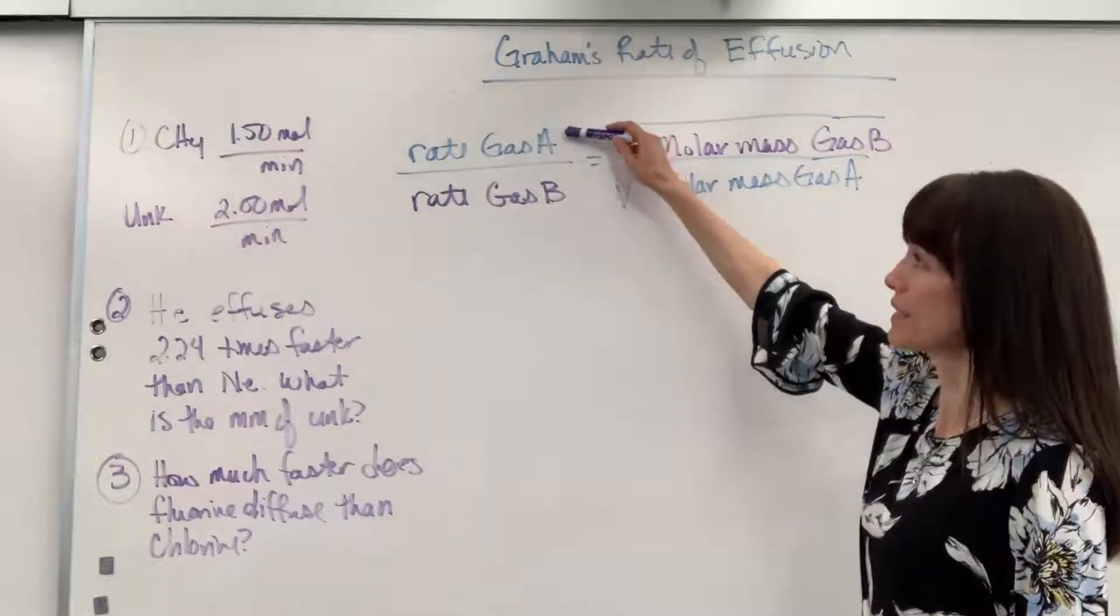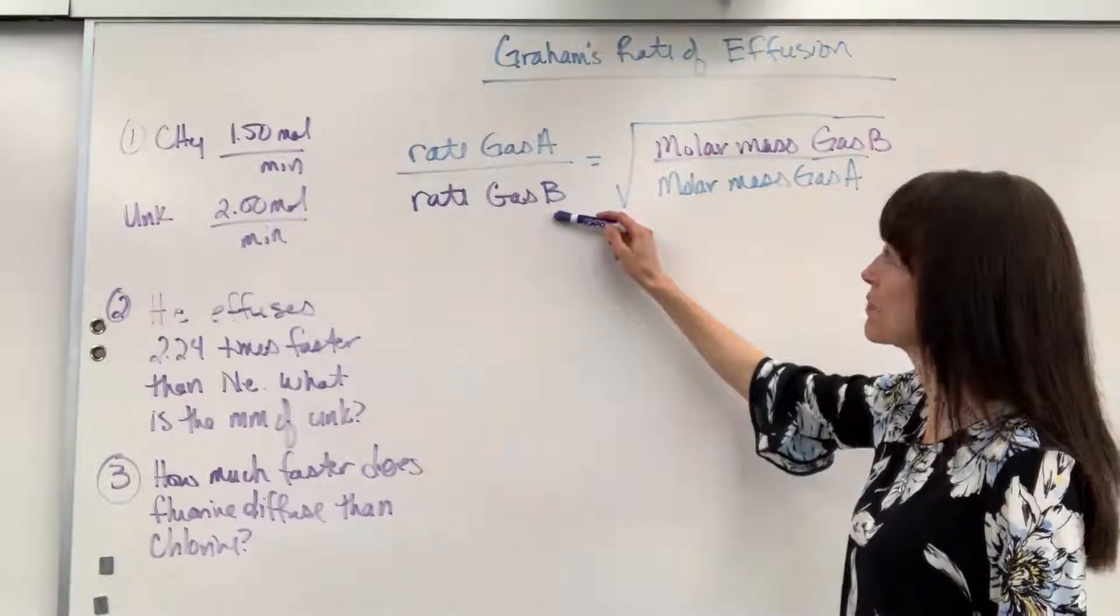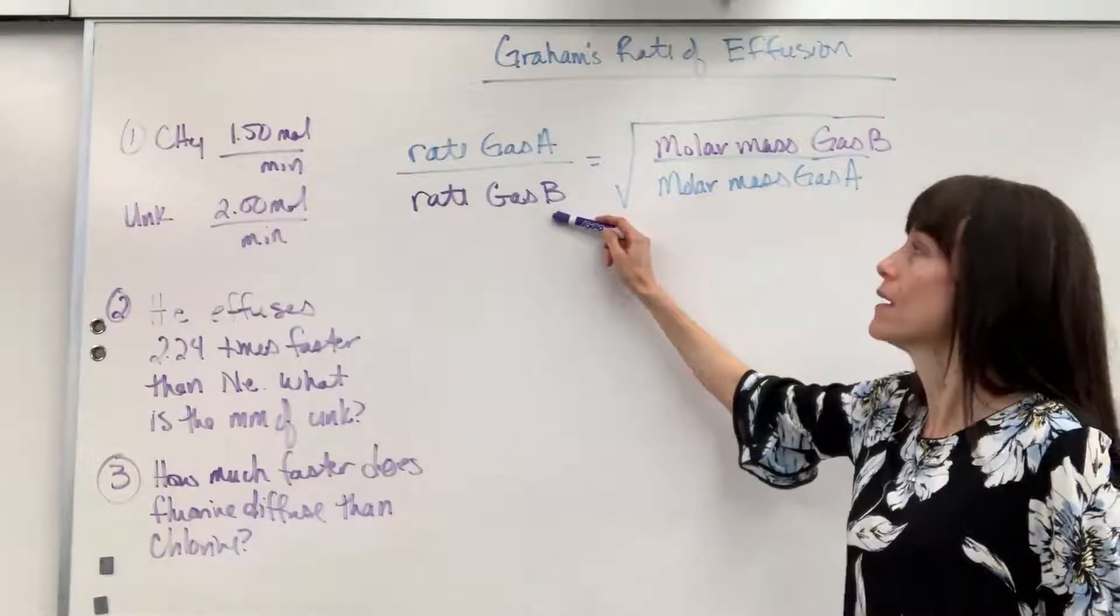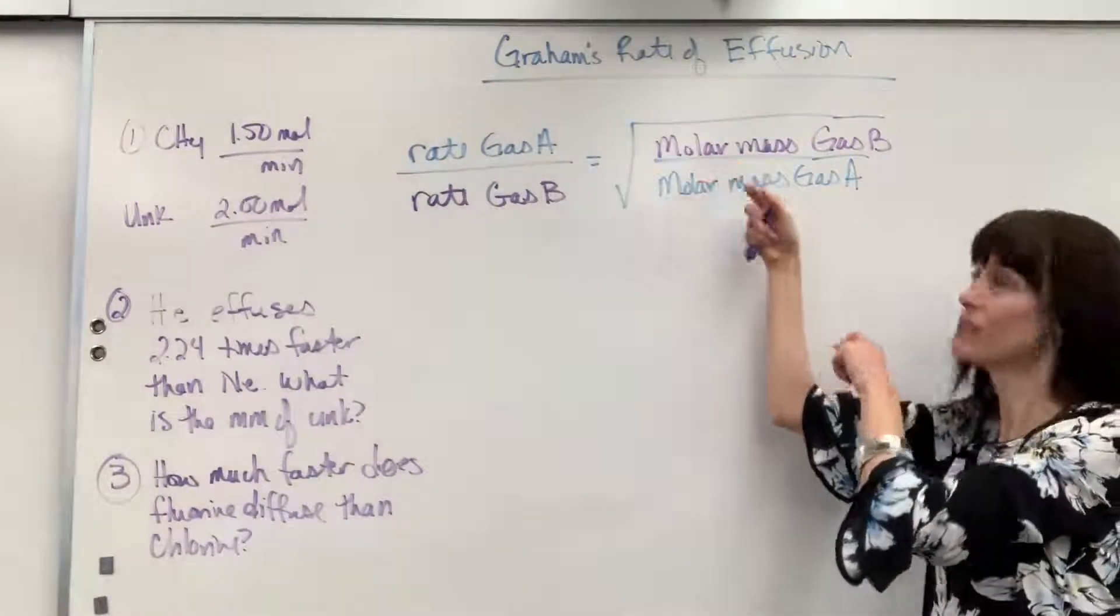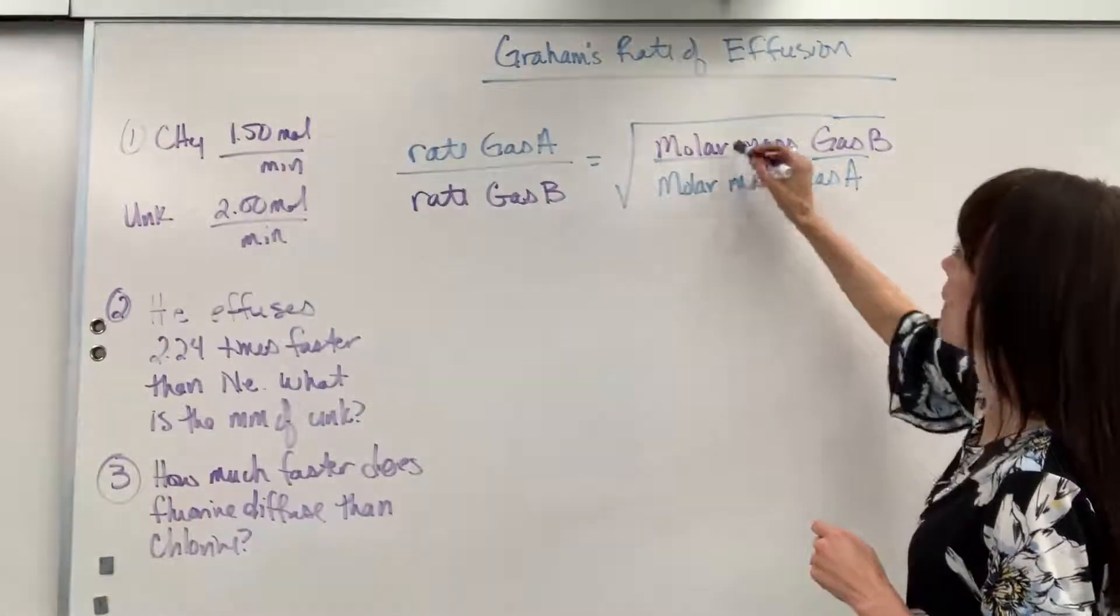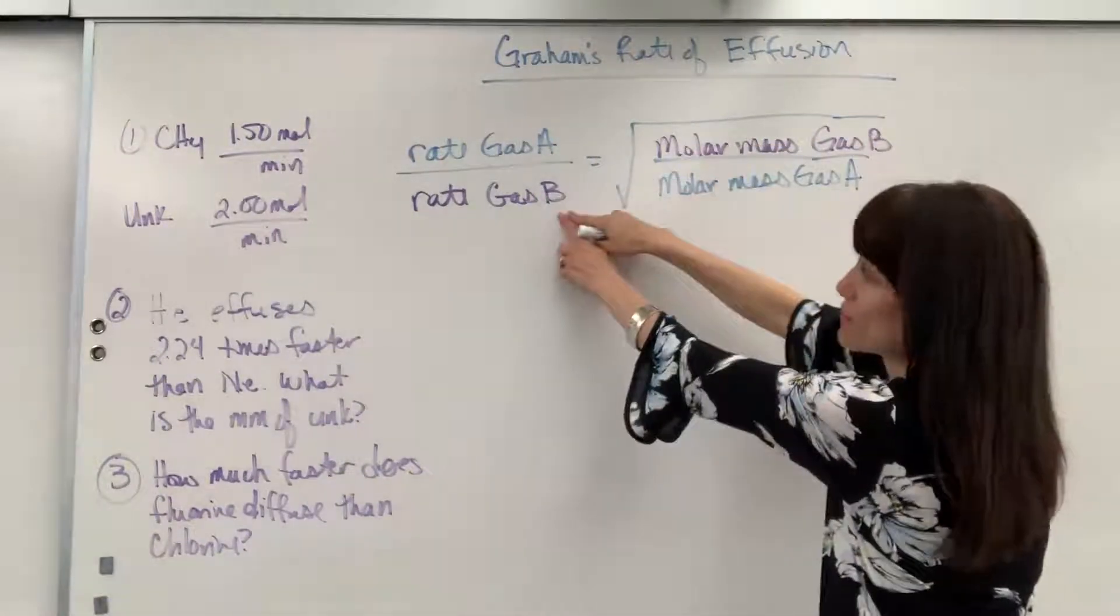So, it's going to be the rate of gas A divided by the rate of gas B. Notice I color-coded this because it equals the reciprocal. It equals the square root of molar mass of gas B. Check that out.